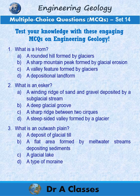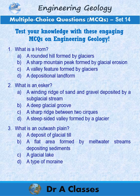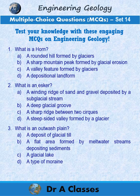Question 3: What is an outwash plain? A. A deposit of glacial till. B. A flat area formed by meltwater streams depositing sediments. C. A glacial lake. D. A type of moraine.